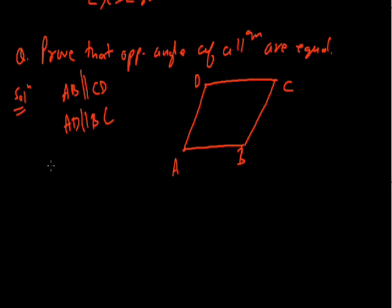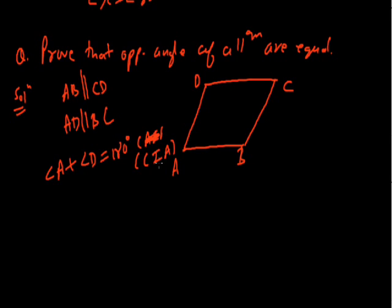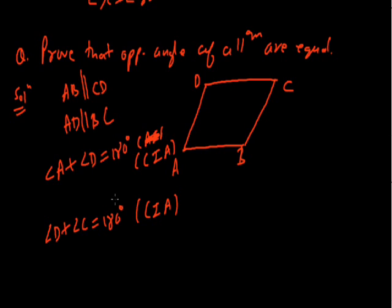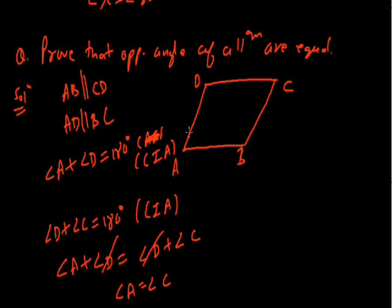In a parallelogram, opposite sides are parallel, so AB is parallel to CD and AD is parallel to BC. As AB is parallel to CD, angle A plus angle D equals 180 degrees because A and D form co-interior angles. Similarly, angle D plus angle C equals 180 degrees. Since both sums equal 180 degrees, angle A plus angle D equals angle D plus angle C, so angle A equals angle C. Thus the opposite angles are equal.